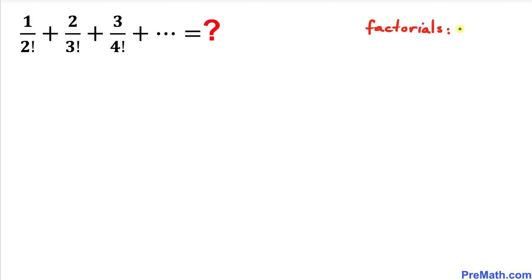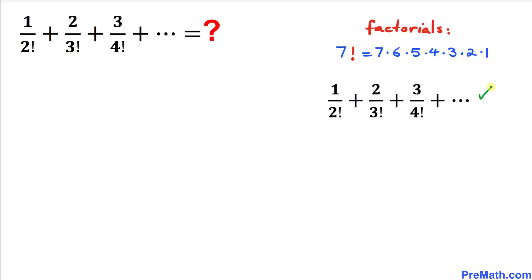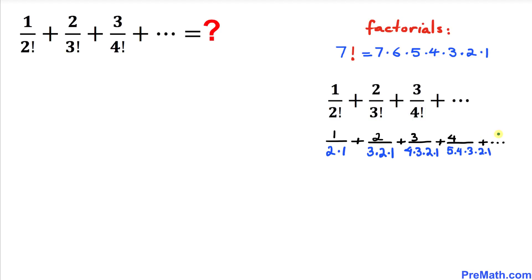Let's talk about factorials before we proceed any further. For example, 7 factorial could be written as 7 times 6 times 5 times 4 times 3 times 2 times 1. Now let's scan this infinite series and focus on the denominators — 2 factorial, 3 factorial, 4 factorial, and so on — and expand them using this definition of factorials.